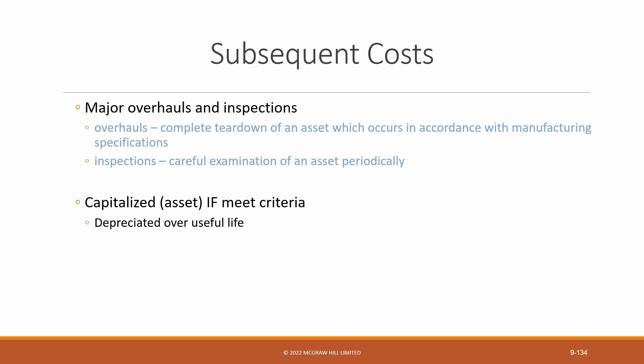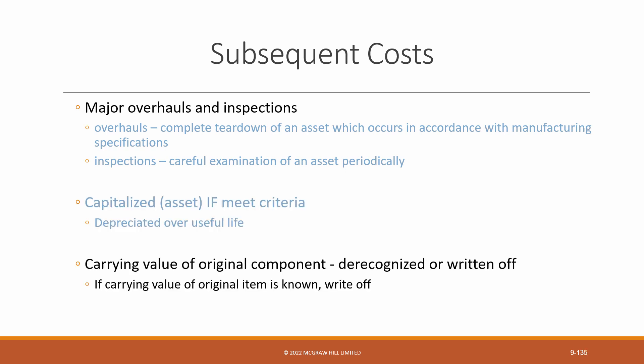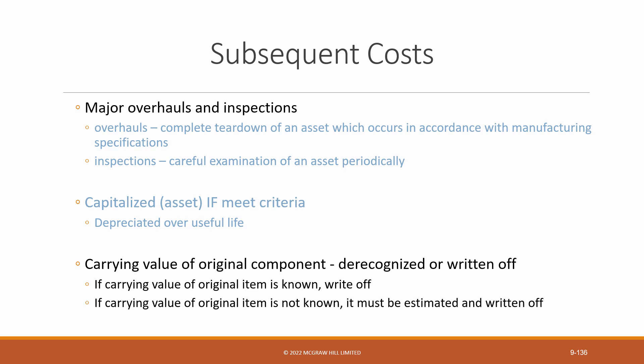If the overhaul or inspection meets the recognition criteria — meaning that it improves the asset's service potential — then the cost can be capitalized and depreciated until the next major overhaul or inspection. Similar to replacements, the carrying value (the original cost less accumulated depreciation) of the previous overhaul or inspection, when known, must be de-recognized or written off when the subsequent overhaul or inspection takes place. If the carrying value is not known, it must be estimated and then written off.